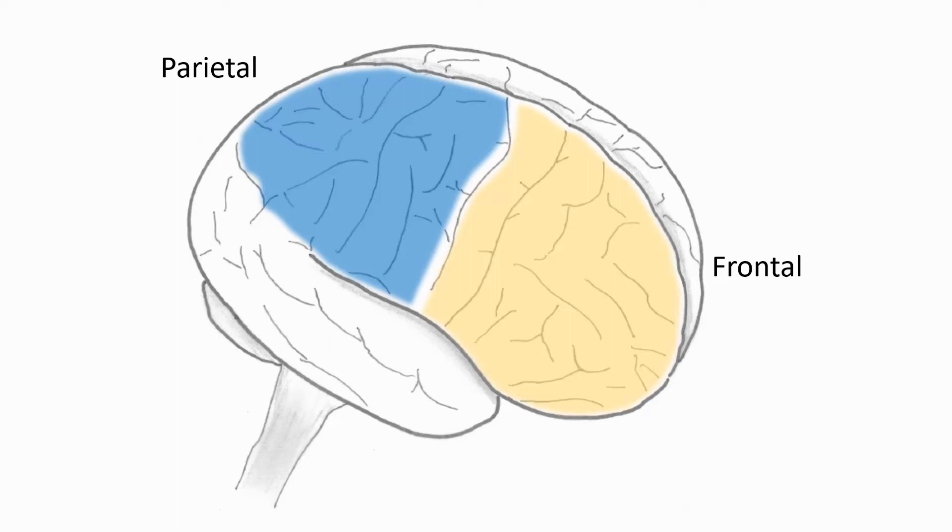At the back of the brain we have the occipital lobes, which contain visual cortex, so very important for processing what we see. Odd perhaps, considering that our eyes are in the front of the brain.